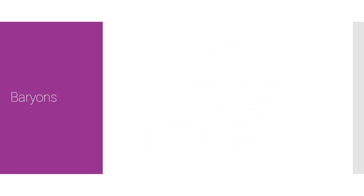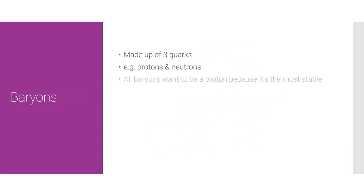What do we need to know about baryons? Their defining trait is they are made up of three quarks — quarks will be covered in a future video. Two examples are protons and neutrons, which are the only two baryons we need to know about according to the specification. The proton is actually the only stable baryon; all baryons are trying to decay into a proton because it is the most stable.